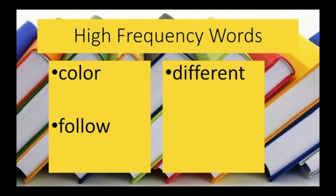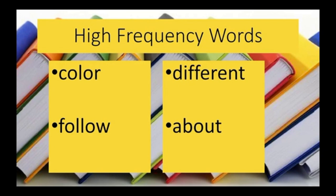The next word is different. D-I-F-F-E-R-E-N-T. Remember to write it out on the table with your finger. The last word is about. A-B-O-U-T.